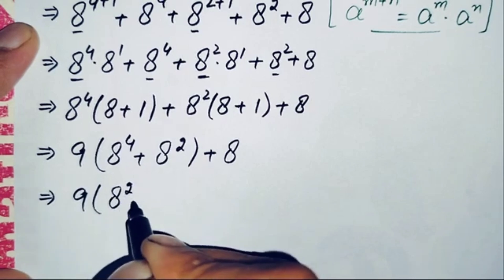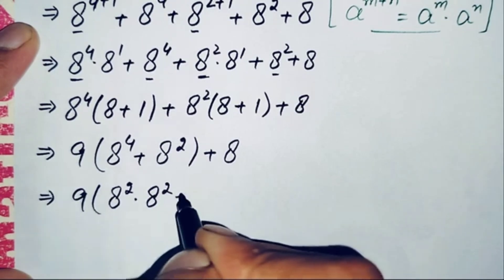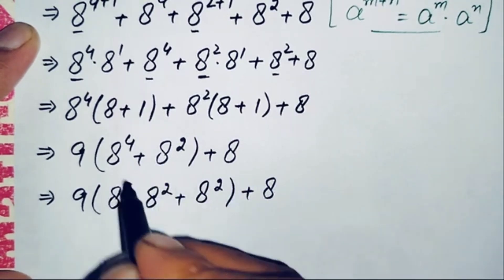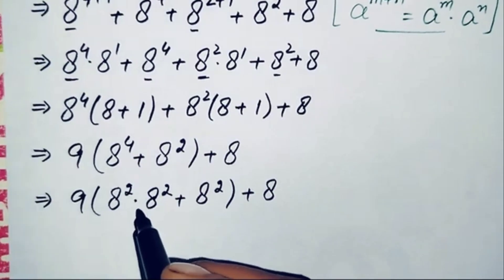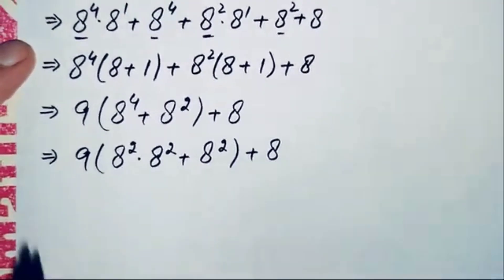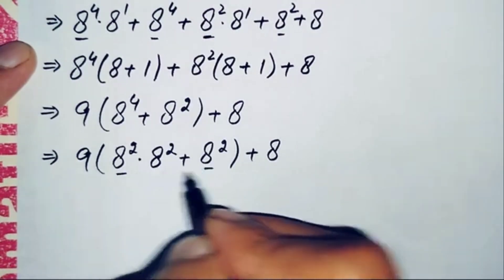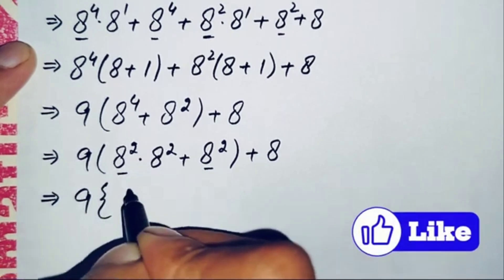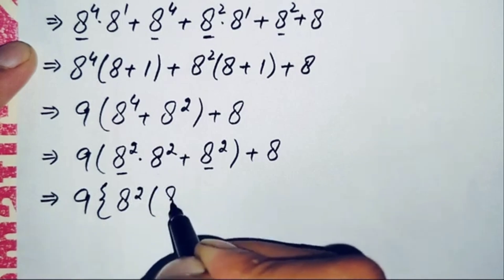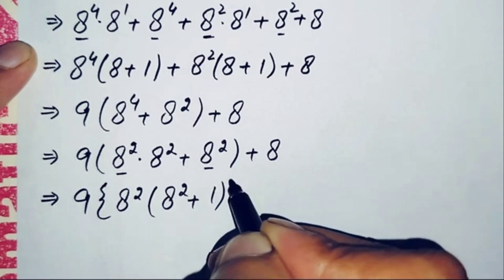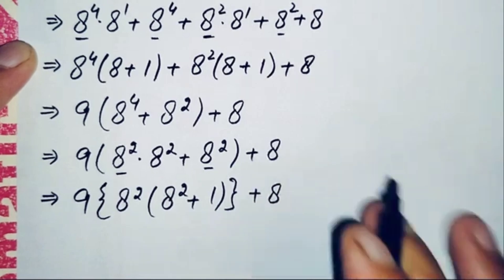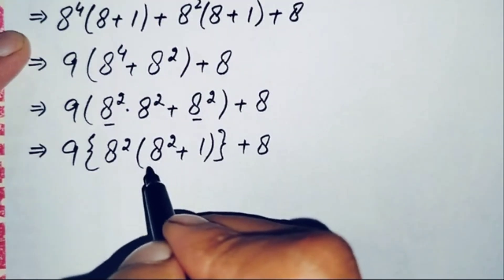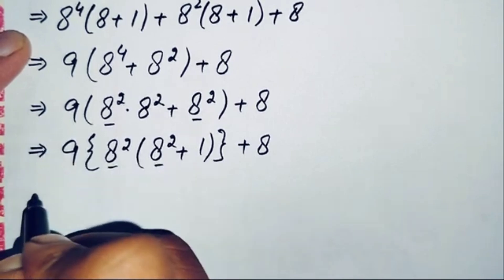Next, we can write 8 raised to power 4 as (8 raised to power 2) times (8 raised to power 2), since the bases are same and we add the powers. Now we take 8 raised to power 2 common from inside the parenthesis: 9 times 8 raised to power 2 times (8 raised to power 2 plus 1), plus 8. The value of 8 raised to power 2 is 8 times 8 equals 64. Replacing 8 raised to power 2 with 64, this becomes: 9 times 64 times (64 plus 1), plus 8.